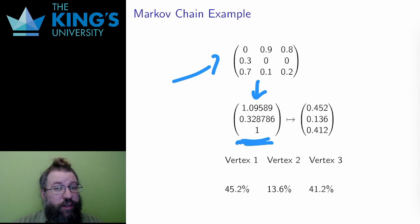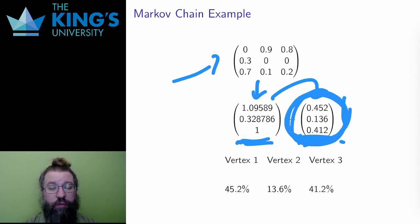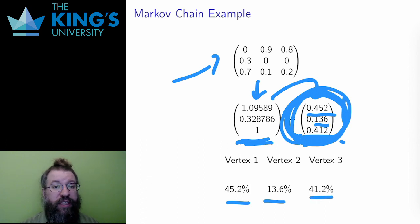However, I want a stochastic vector, or else it's meaningless for probability. But remember that I can scale eigenvectors. So I add up all the coefficients and divide by that number, and I scale this to be a stochastic vector with entries that add up to 1. So this is the dominant stochastic eigenvector. All other behaviors decay away, so this entirely determines the behavior of the system. In the long run, there is a 45.2% probability of being in state 1, 13.6% for state 2, and 41.2% for state 3.